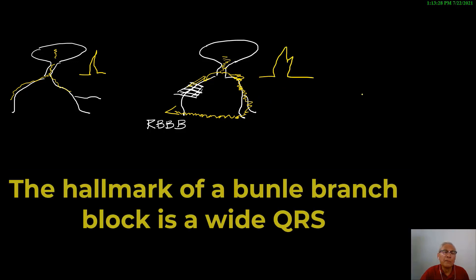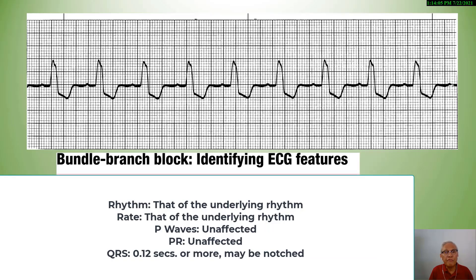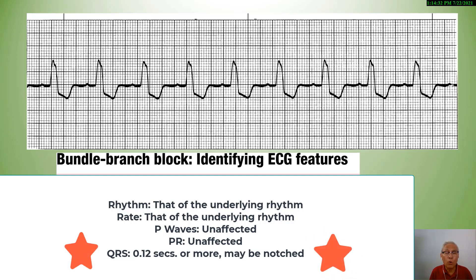The hallmark of a bundle branch block — a block in any of these bundles — is a wide QRS complex, measuring more than 0.12 seconds. The identifying features of a bundle branch block are: the rhythm could be regular or irregular, as it can occur with sinus rhythms or atrial fibrillation; the rate is dependent on the underlying rhythm; P waves and PR intervals should not be affected; and the QRS complex will be 0.12 seconds or more — the hallmark of bundle branch block.